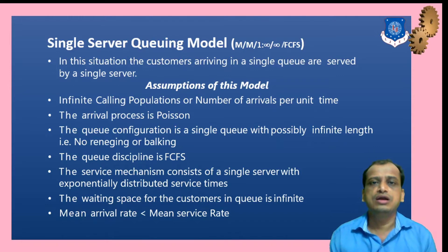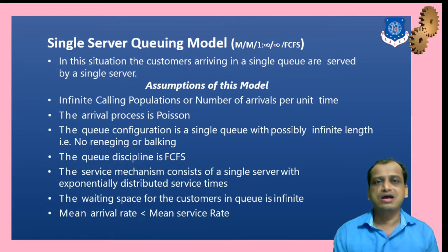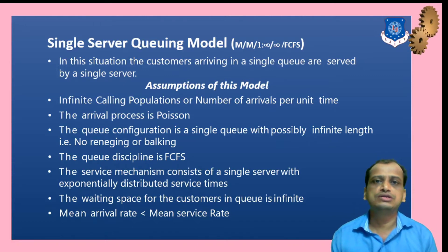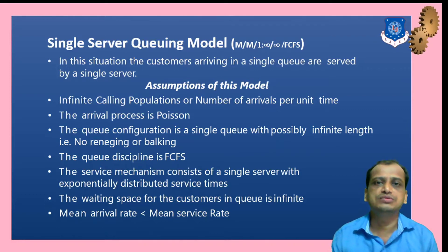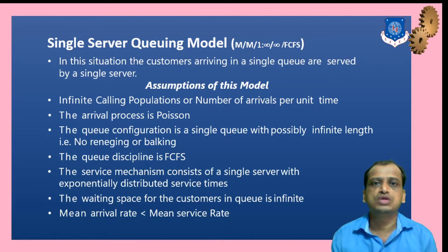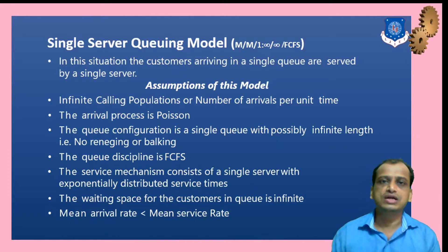The last assumption is that the mean arrival rate λ must be less than the mean service rate μ. If arrival rate is more than service rate, the queue becomes unmanageable. So we assume λ < μ so that we can easily model the problem.